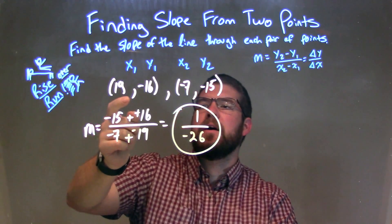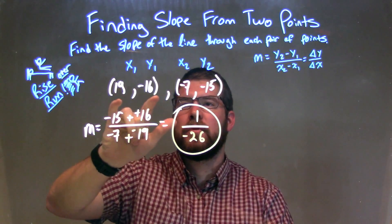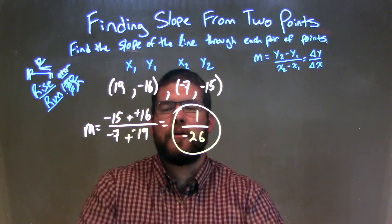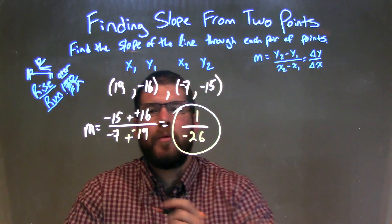We're given our two points, 19, negative 16, which is X1 and Y1, and X2, Y2 is negative 7, negative 15. And I made sure I labeled them under my X1, Y1, X2, Y2s.